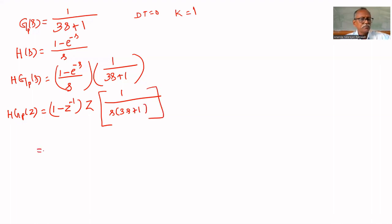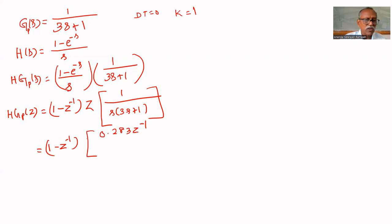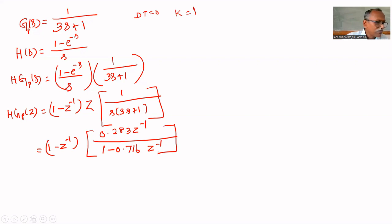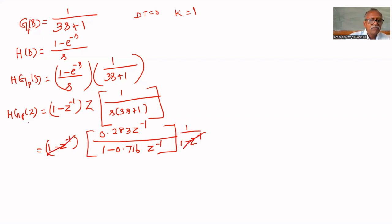That equals (1 − z^(−1)) multiplied by 0.283z^(−1) / (1 − 0.716z^(−1)). The (1 − z^(−1)) terms cancel, so HGP(z) equals 0.283z^(−1) / (1 − 0.716z^(−1)).